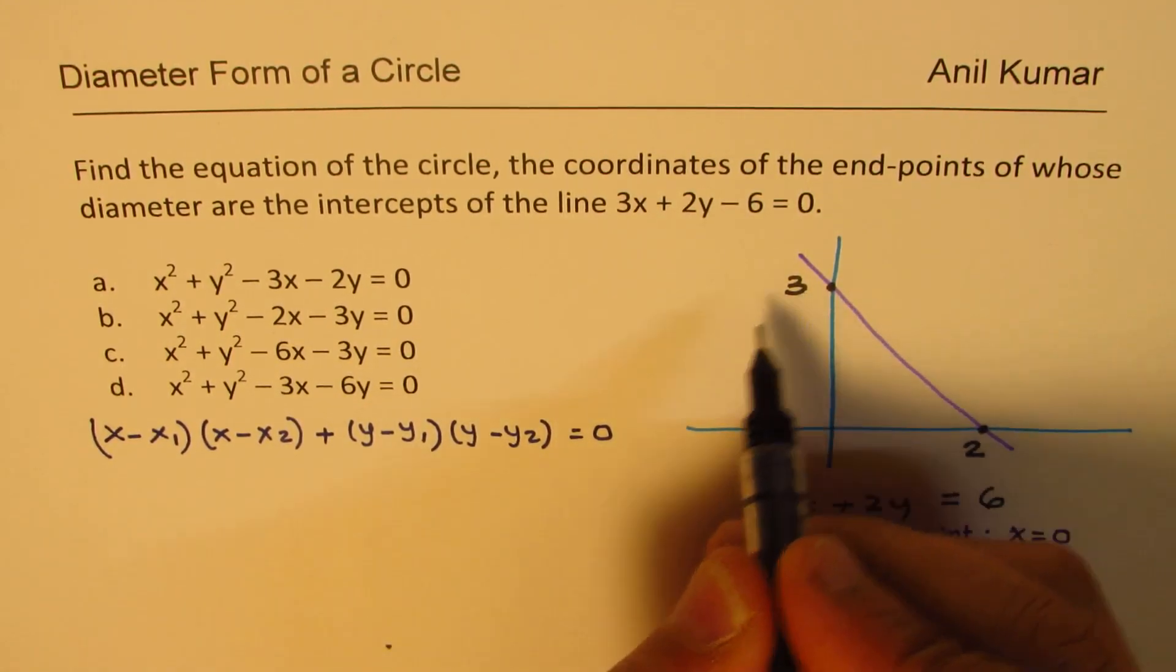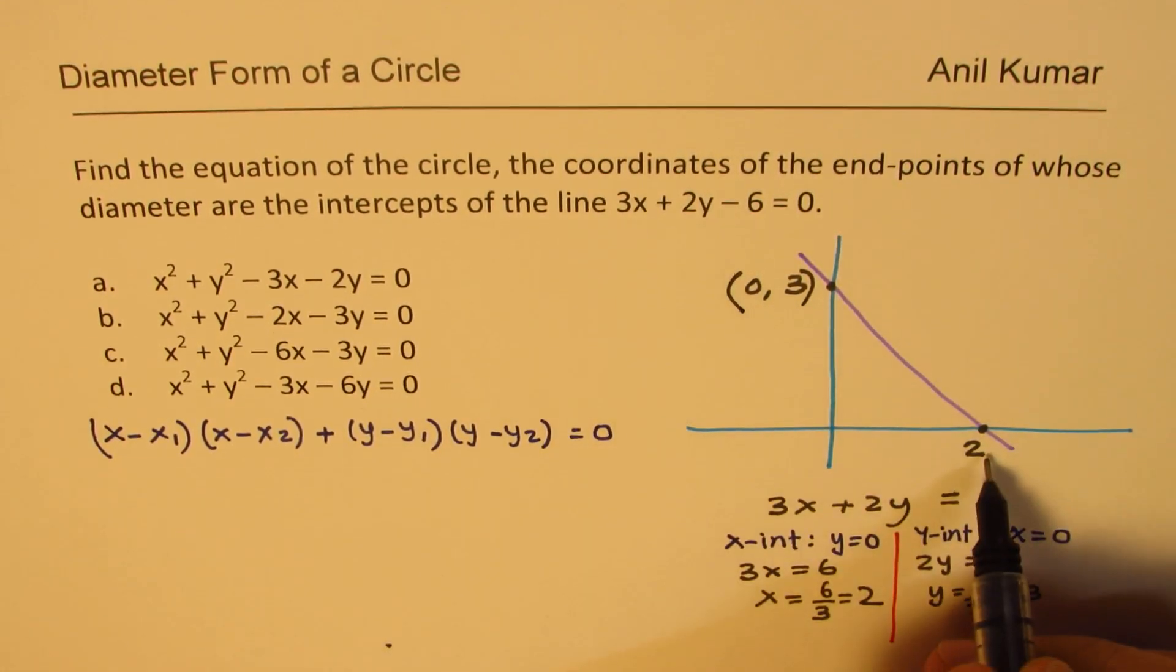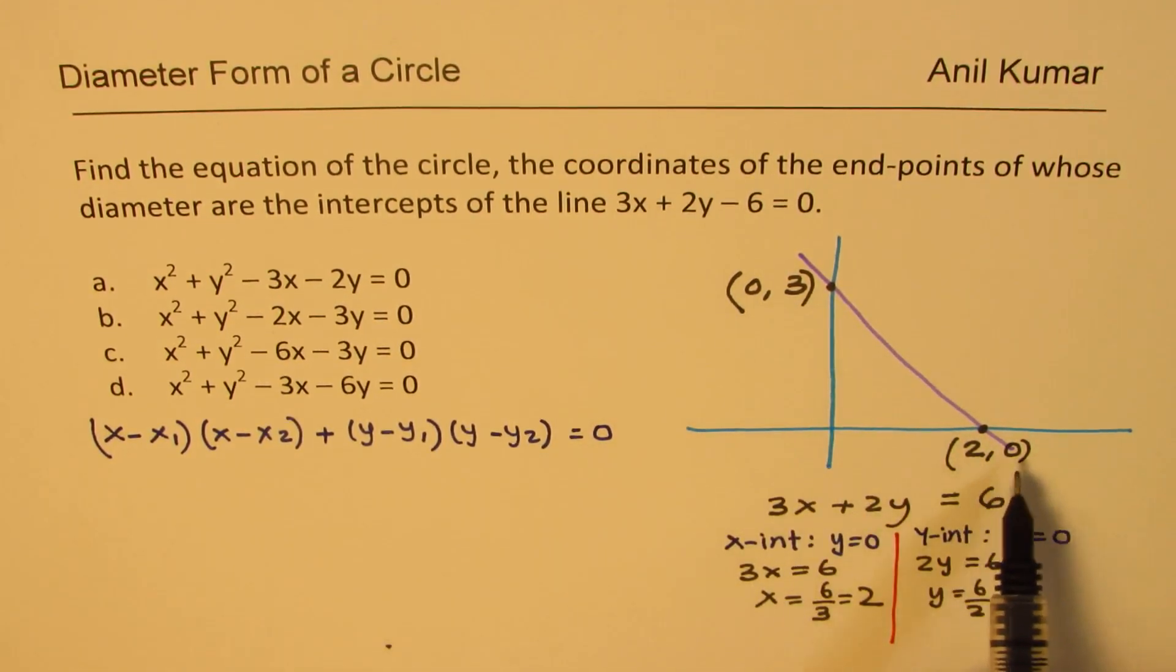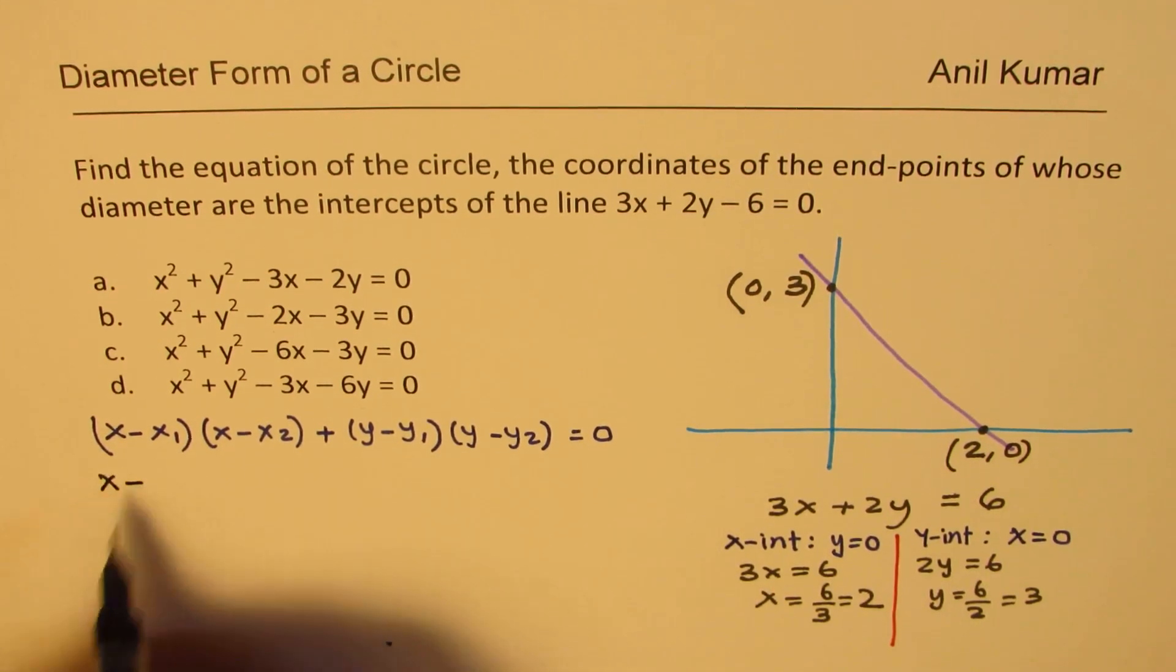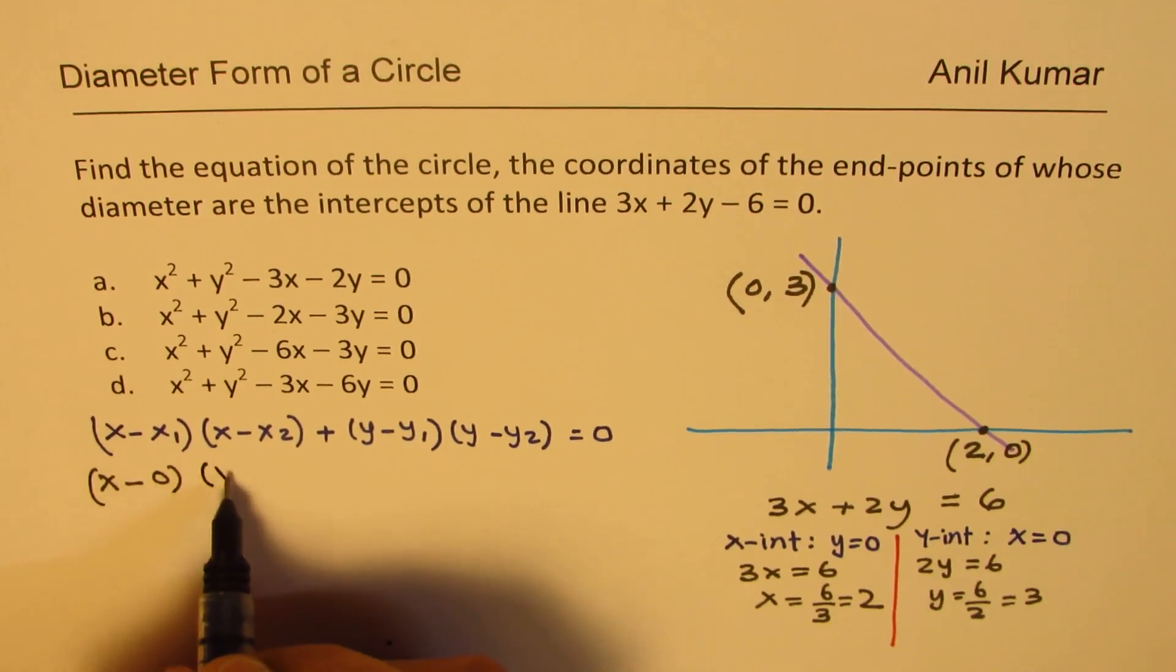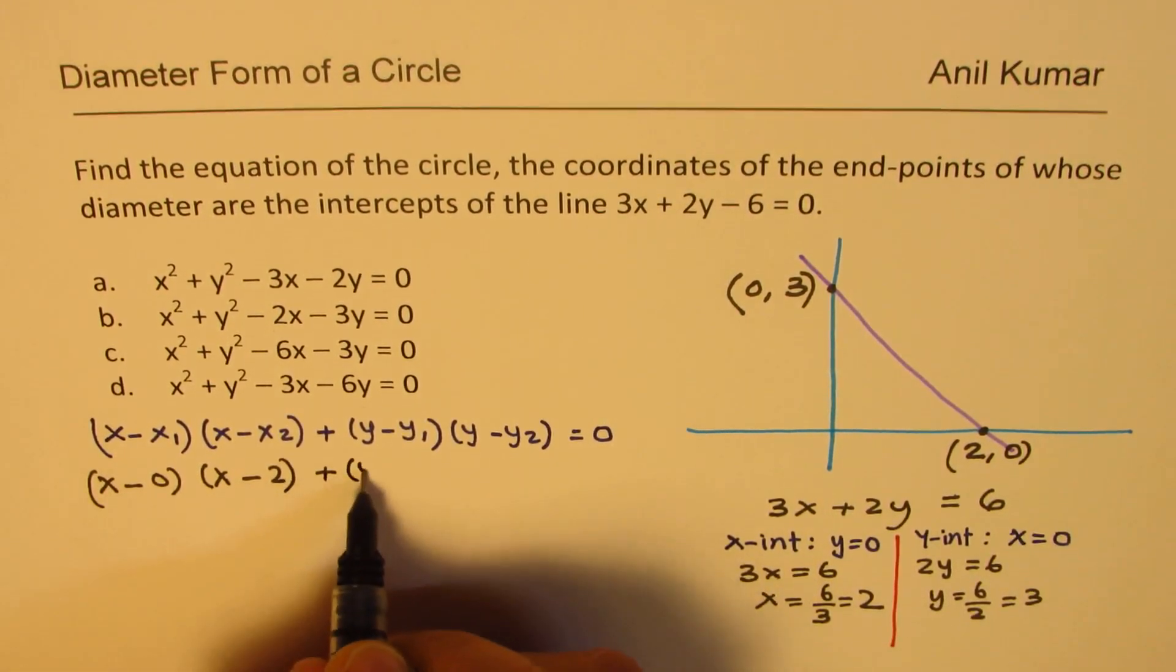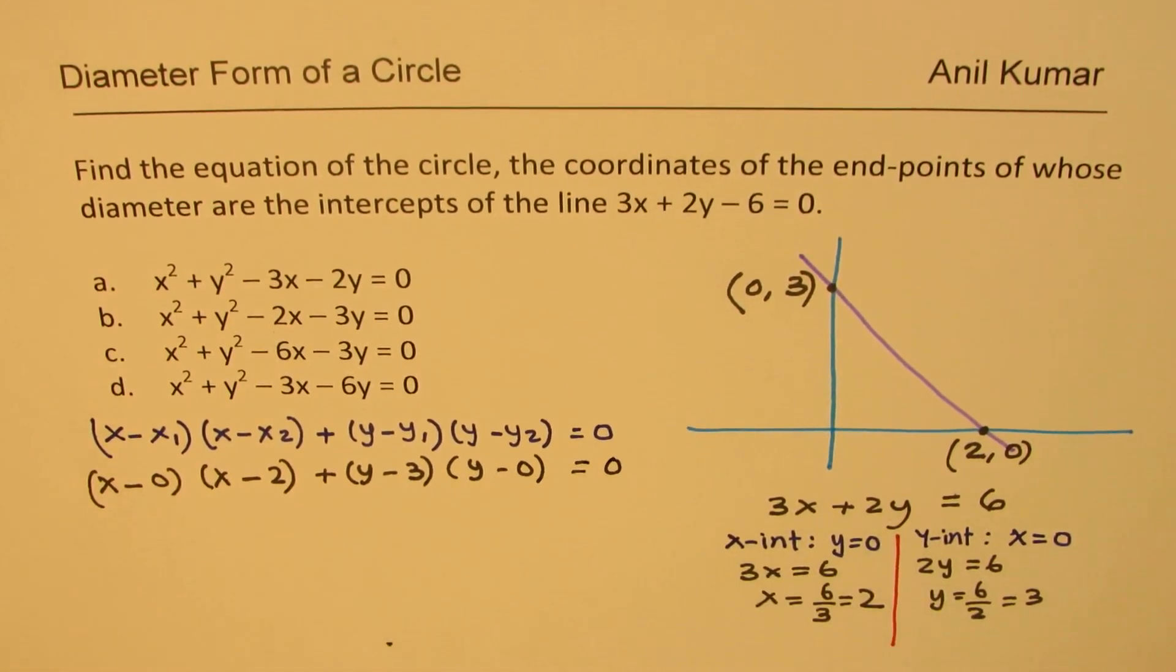We know our values. So here the point is (0, 3) and here the point is (2, 0). So we get x1, y1 and x2, y2. So we can now write down this as (x minus 0) times (x minus 2) plus (y minus 3) times (y minus 0) equals to 0.